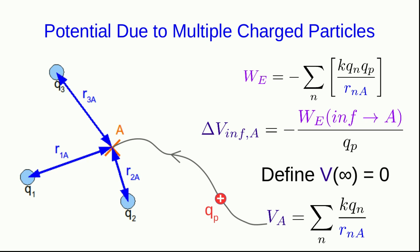And so all that happens when we divide by Qp is all the factors of Qp disappear, and we're left with this expression, which was exactly what we expected, the sum of the potentials due to each of the particles.